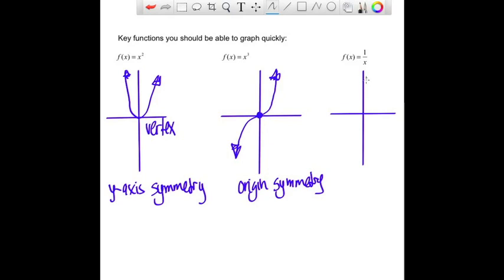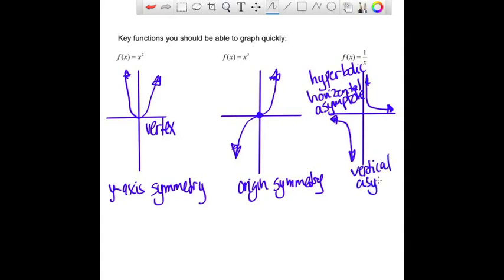And then finally, 1 over x looks a little like this. It has sort of a fancy name, and it has two branches. The fancy name would be hyperbolic. It has several key features. It has asymptotes. It has a horizontal asymptote. In this case, the x-axis. And it has a vertical asymptote. In this case, the vertical is the y-axis. And if you look at it, you can see that it does, again, have origin symmetry. You'll see a couple of these in your homework.